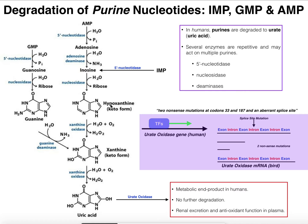Hypoxanthine will react with an enzyme called xanthine oxidase, which has some implications in gout — we'll talk about pharmacological implications in the next video. So hypoxanthine will be converted into xanthine. Now let's go back and look at GMP degradation.